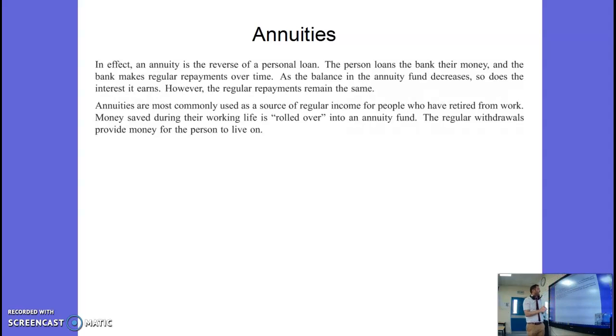In effect what an annuity is is the reverse of a personal loan. So if we've looked at amortization, paying back of loans, annuities are basically kind of the opposite of that because you put money into the bank and then you're getting a payment back rather than a loan where you take the big money in at the start and slowly pay it back.